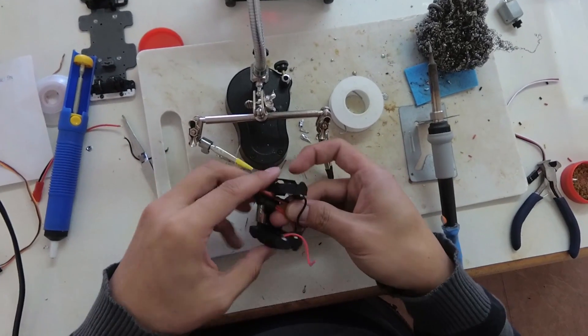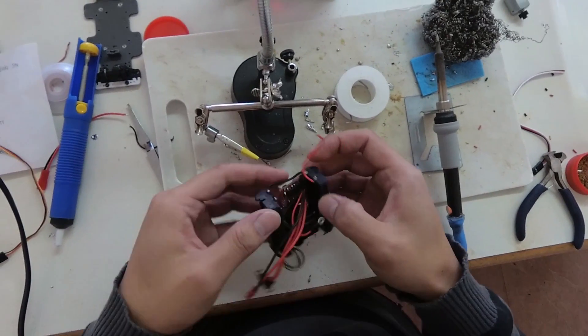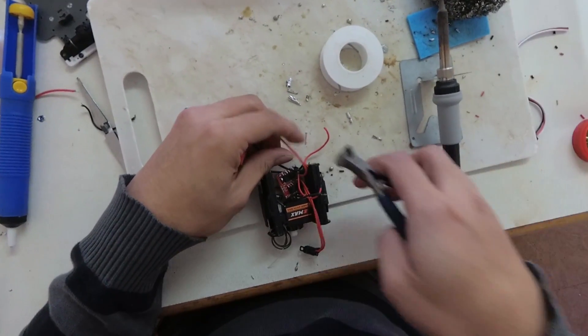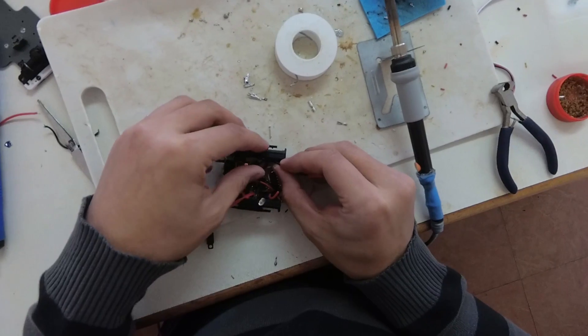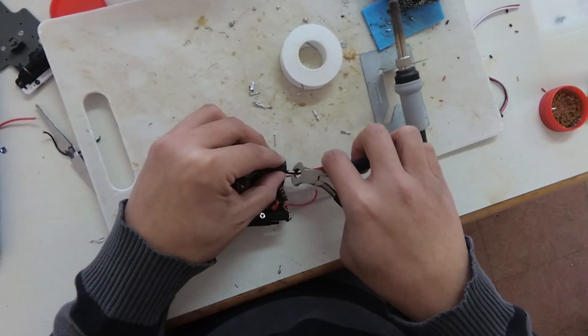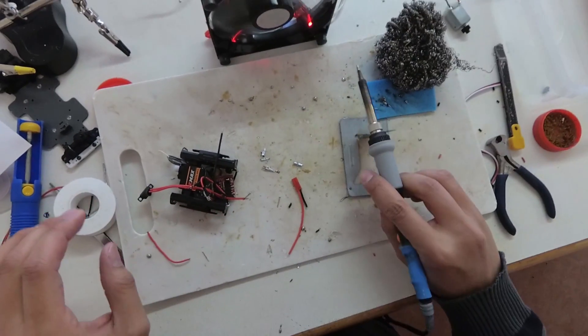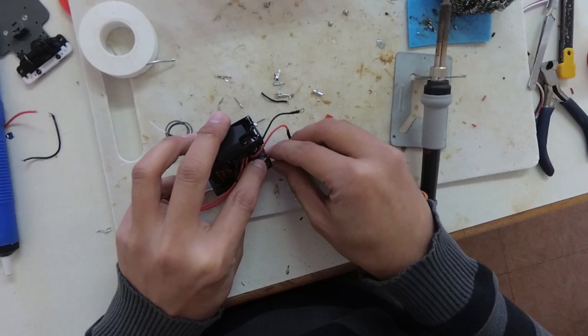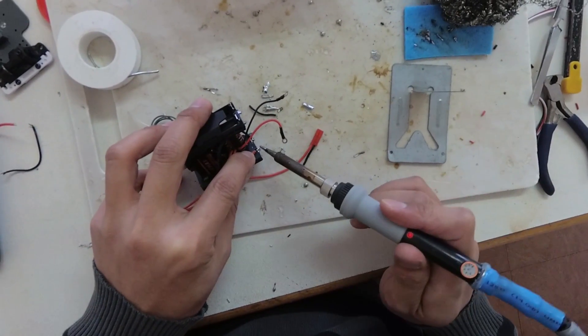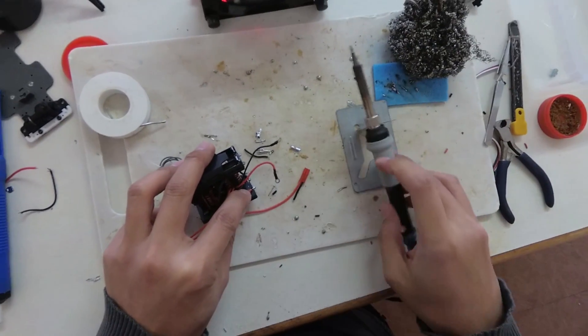What's left now is to solder the battery trays to the ESC. Again, measure the wires, cut, tin, remove the old wires, and then solder the new ones on. And it is done.